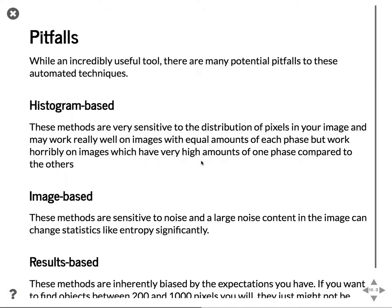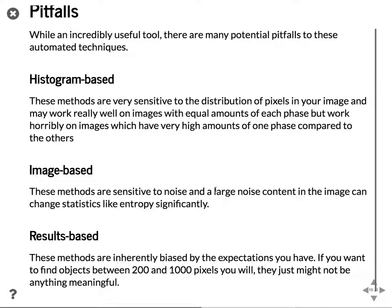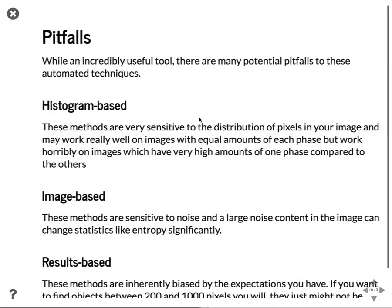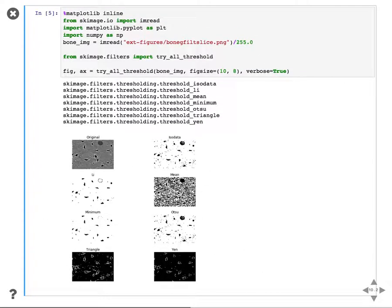In terms of pitfalls, while there are many good use cases, some techniques require you to be very careful. The histogram-based techniques are very sensitive to the distribution of pixels in your image — they might work really well on images with equal amounts of each phase but work horribly on images that have a high amount of one phase compared to the other. For example, if we look at a small sub-region of the image where there is almost no bone or no cellular structures, the algorithm will still try to find something to segment.